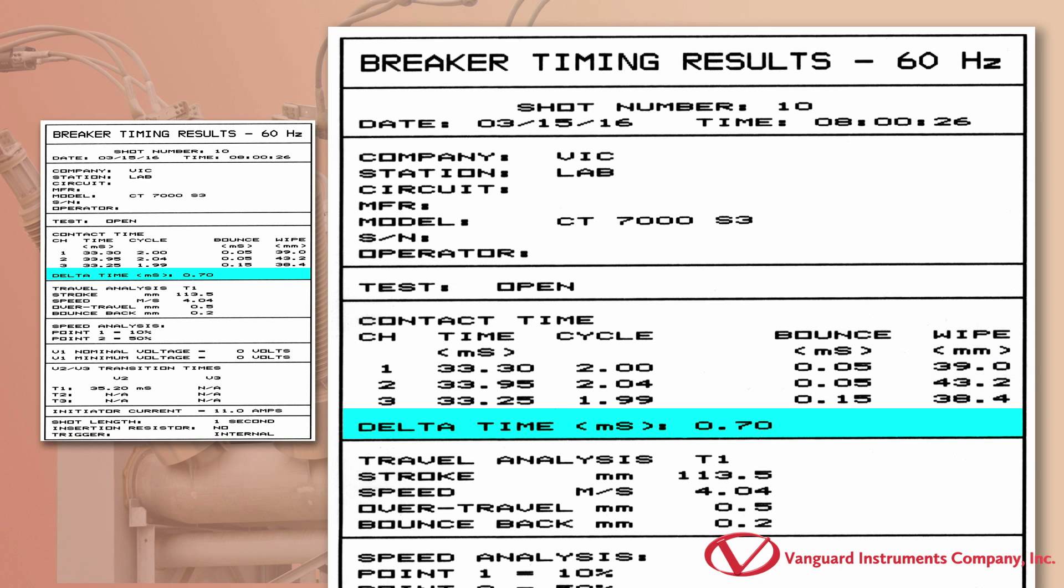The delta time is shown here. This is the difference between the fastest and slowest contact time.